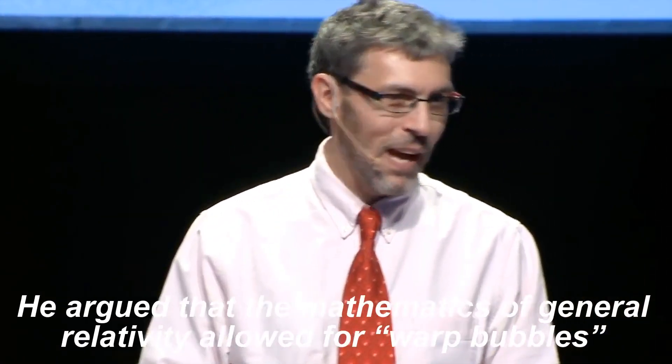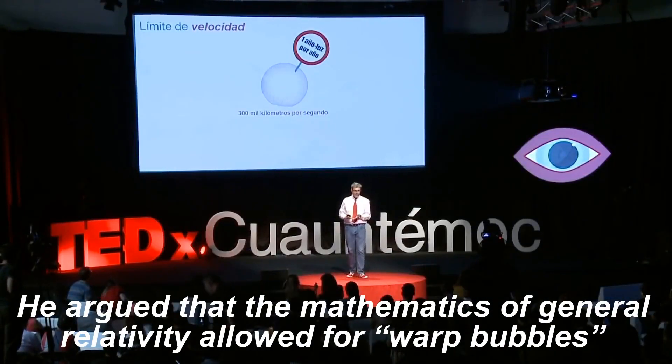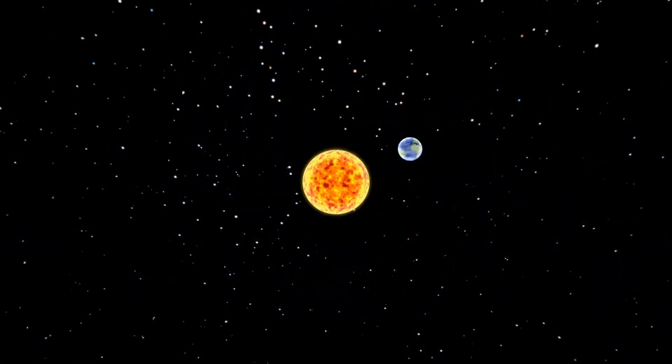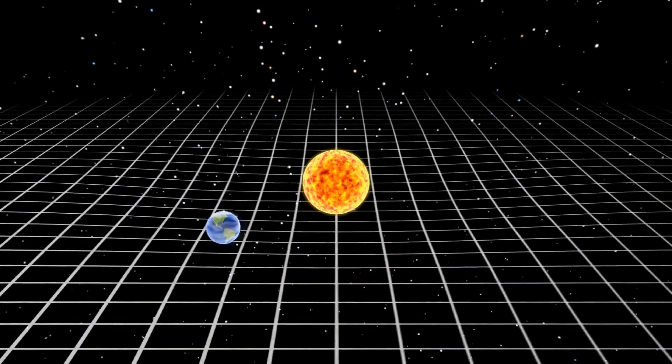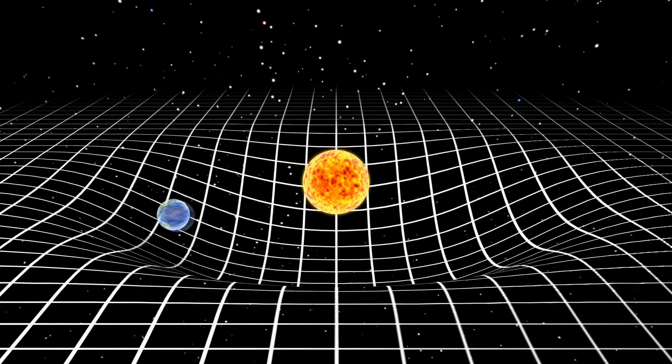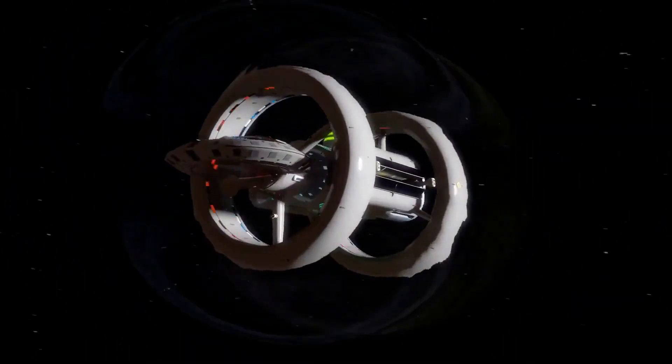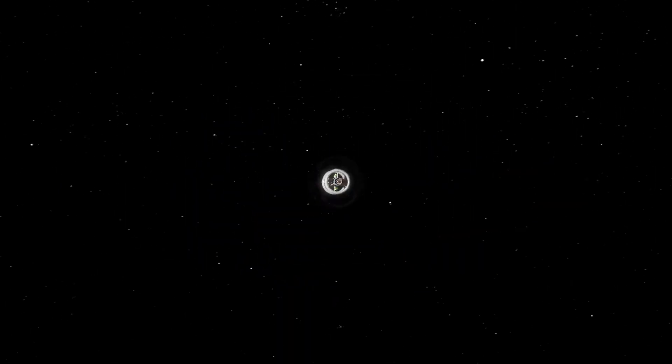This is where Alcubierre came in. He argued that the mathematics of general relativity allowed for warp bubbles—regions where matter and energy were arranged in such a way as to bend space-time in front of the bubble and expand it to the rear, in a way that allowed a flat area inside the bubble to travel faster than light.